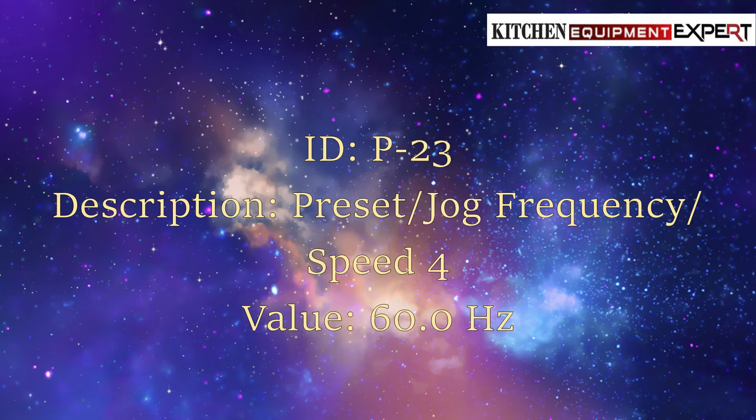ID Parameter P23. Description: Preset/Jog Frequency/Speed 4. Value: 60.0 Hz.